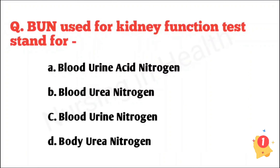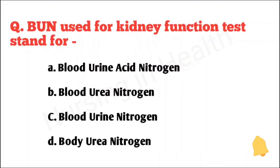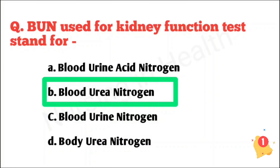BUN used for kidney function test stands for: blood urine acid nitrogen, blood urea nitrogen, blood urine nitrogen, or body urea nitrogen. Right answer option B: blood urea nitrogen.